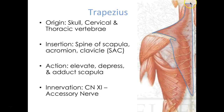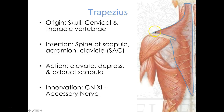The origin is the area where the muscle attaches that has no movement — in this case it's the skull, cervical vertebrae, and thoracic vertebrae. The insertion is where the muscle attaches and where the actual movement occurs. In this case it's the spine of the scapula, acromion, and then this muscle wraps anteriorly to insert onto the clavicle as well.